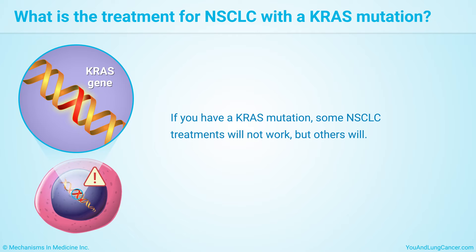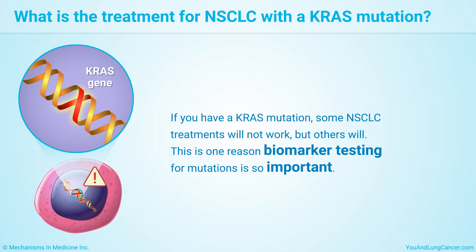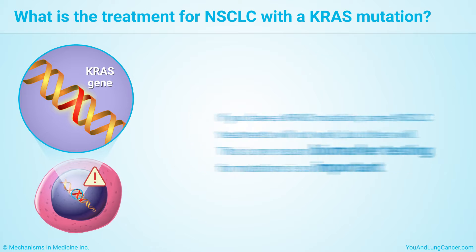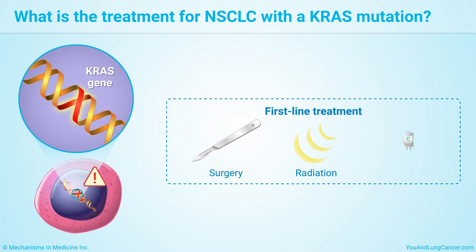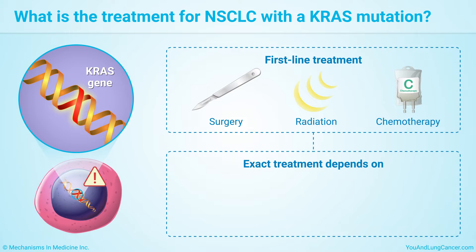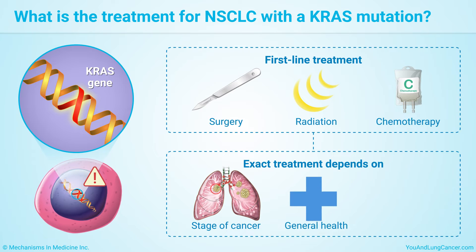If you have a KRAS mutation, some non-small cell lung cancer treatments will not work, but others will. This is one reason biomarker testing for mutations is so important. The first treatment for non-small cell lung cancer with a KRAS mutation may include surgery, radiation, and chemotherapy. The exact treatment depends on the stage of cancer, your general health, and other factors.